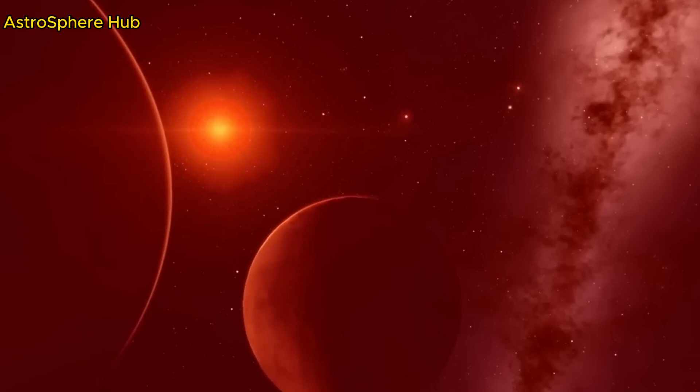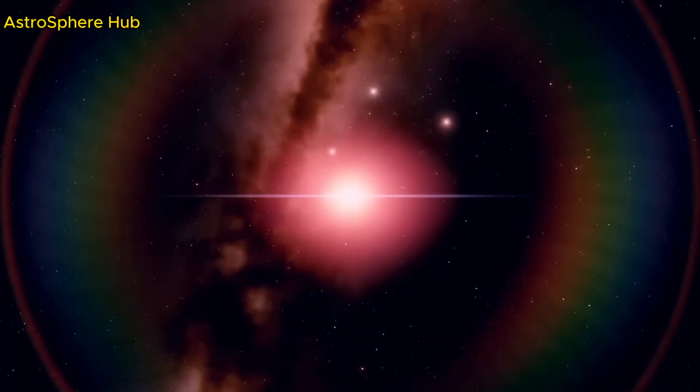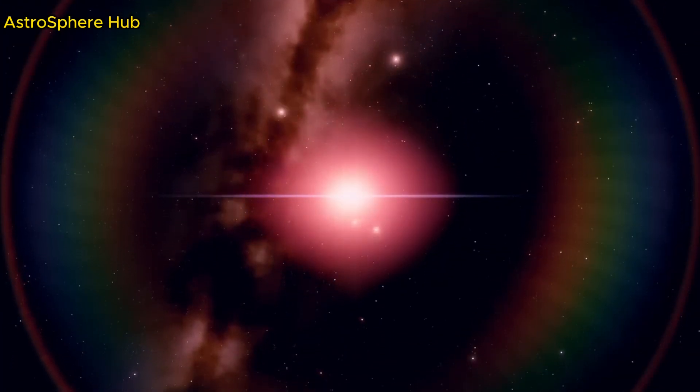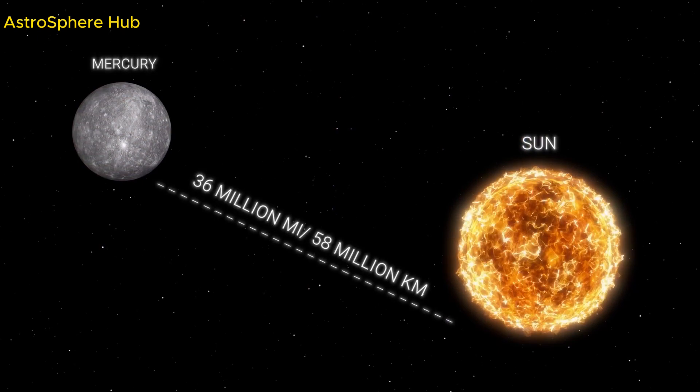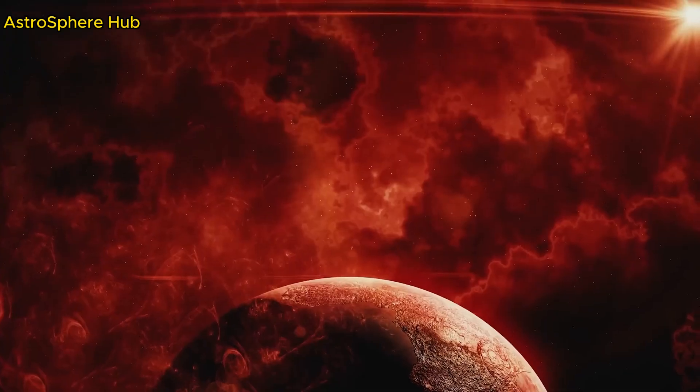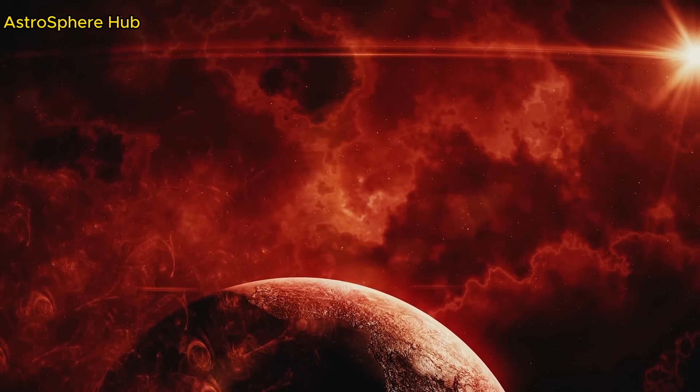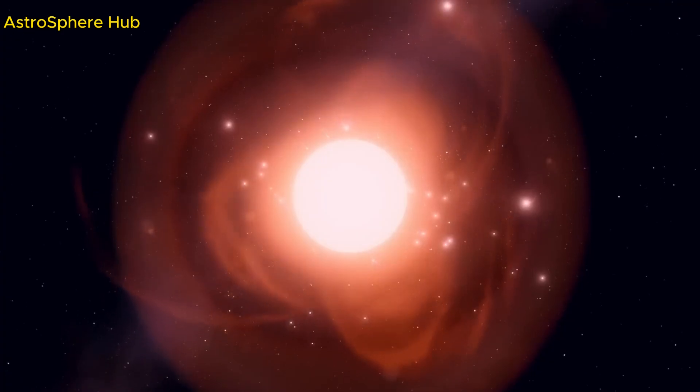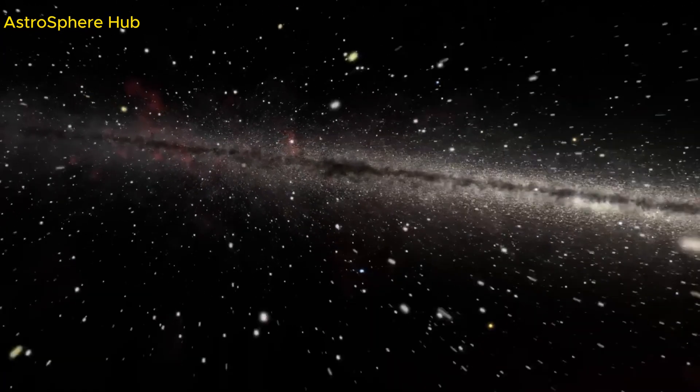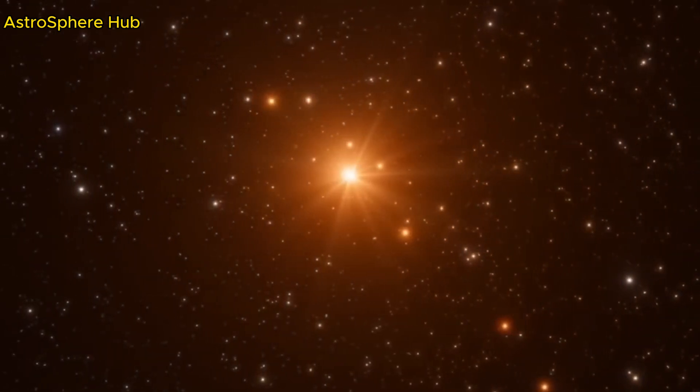Slightly farther out, another planet rotates around the red dwarf, TRAPPIST-1c. In the past, it was believed that the second planet in the TRAPPIST-1 system was similar to Venus. But the data from James Webb Telescope proved scientists wrong. The planet doesn't have a Venus-like thick atmosphere.